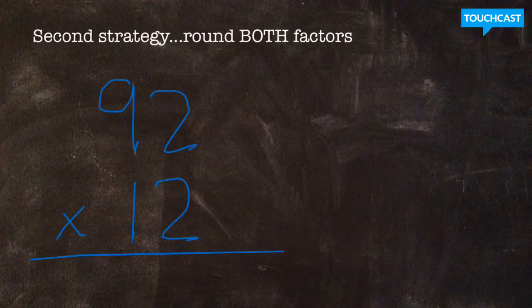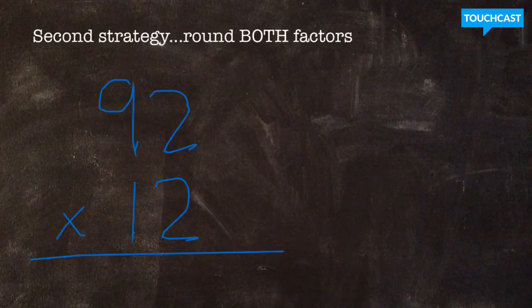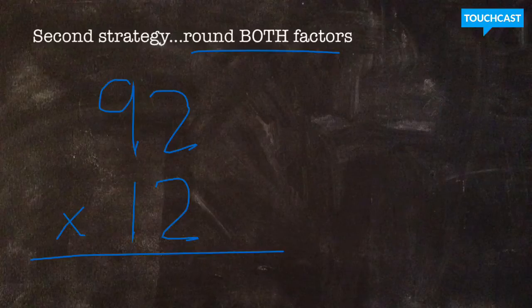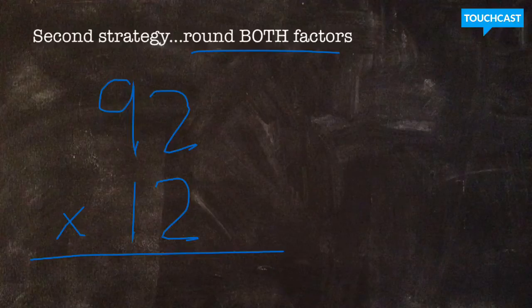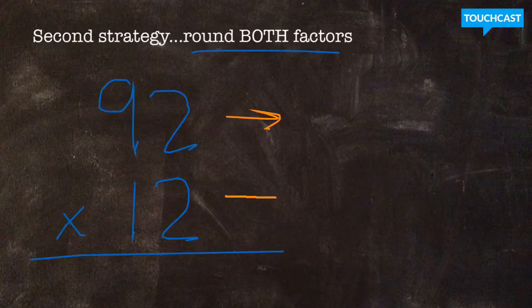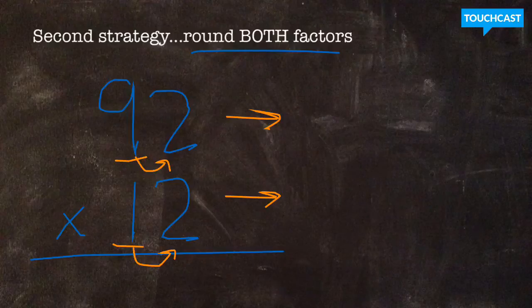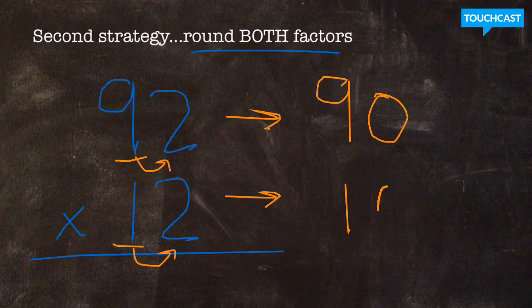Now we're going to move on to our second strategy that we could choose to utilize. The name of this strategy is rounding both factors in a multiplication equation. So you'll see here I have the original equation that we started back on strategy 1, 92 times 12. Now, as the name gives you a hint, what you're going to do is round both factors in this equation. This is a little bit easier to do because you can kind of just jump ahead and say, I don't have to choose which factor because I'm actually going to round both. So if we complete our process of rounding on both the numbers 92 and 12, 92 rounds to 90, 12 rounds to 10.